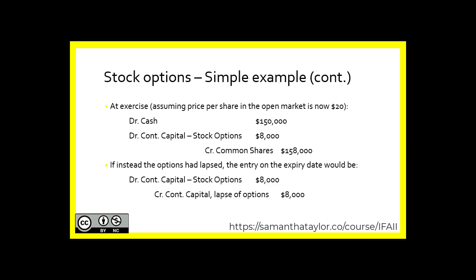At the exercise date, assuming the price per share in the open market is now $20, there would be a debit for $150,000, which represents the option price of $15 times the 10,000 stock options. There is also a debit for contributed capital — stock options — to remove the $8,000 amount that was credited at the time of issuance. And a credit for common shares in the amount of $158,000, which is the combination of cash proceeds received as well as reversing out the contributed capital from the time of issuance.